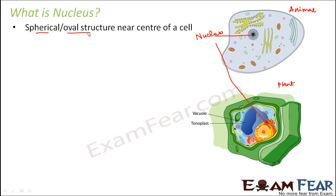Nucleus is a spherical or oval structure near the centre of a cell, but it is not always at the centre. Sometimes, especially in plant cells, there is a big vacuole present inside the cell. This vacuole is quite large in plant cells and it often pushes the nucleus towards the periphery. That's why in plant cells, the nucleus is often towards the side rather than the centre.